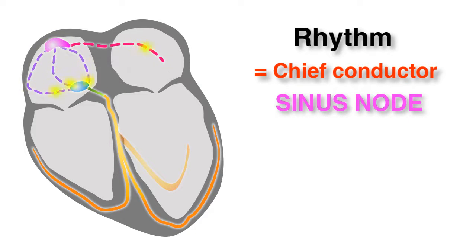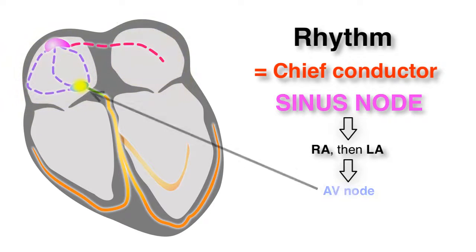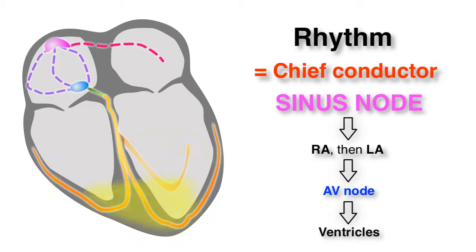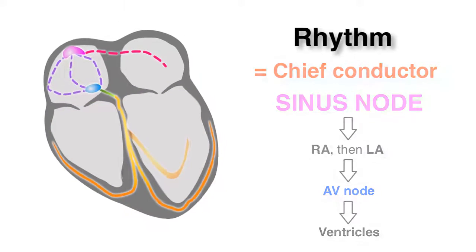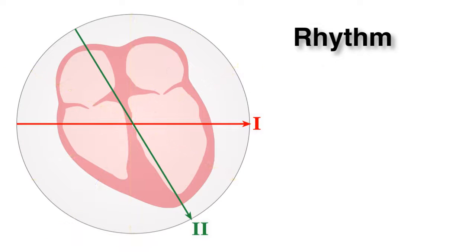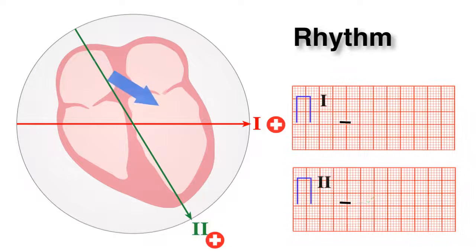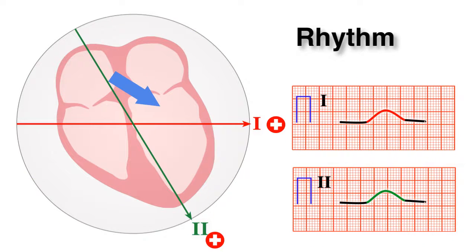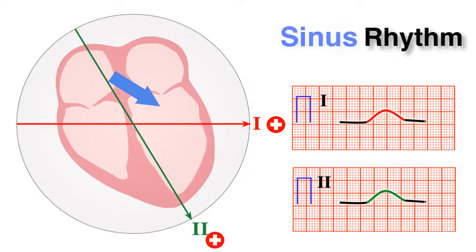Its electrical stimulus depolarizes the right and left atriums, and then the AV node, and then down the ventricles. In order to determine sinus rhythm, you must only look at leads 1 and 2. If the p-wave in leads 1 and 2 is positive, then it is considered sinus rhythm.